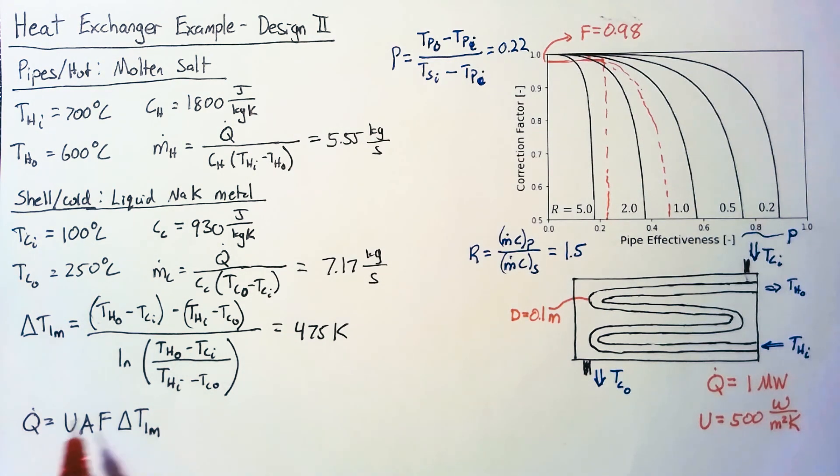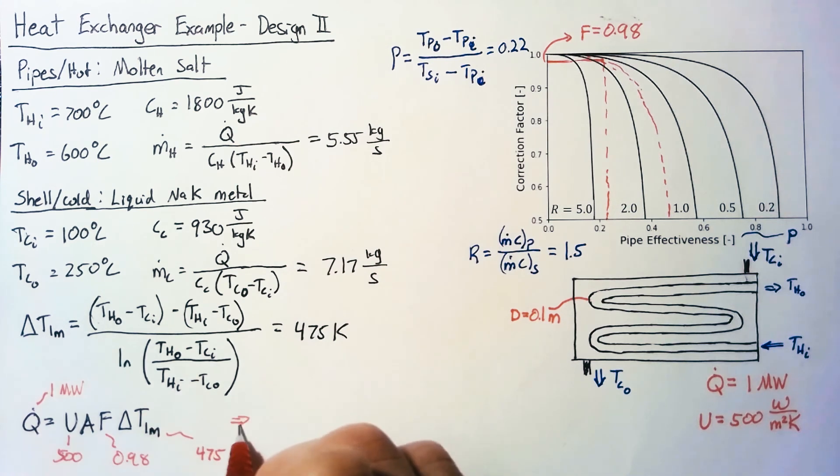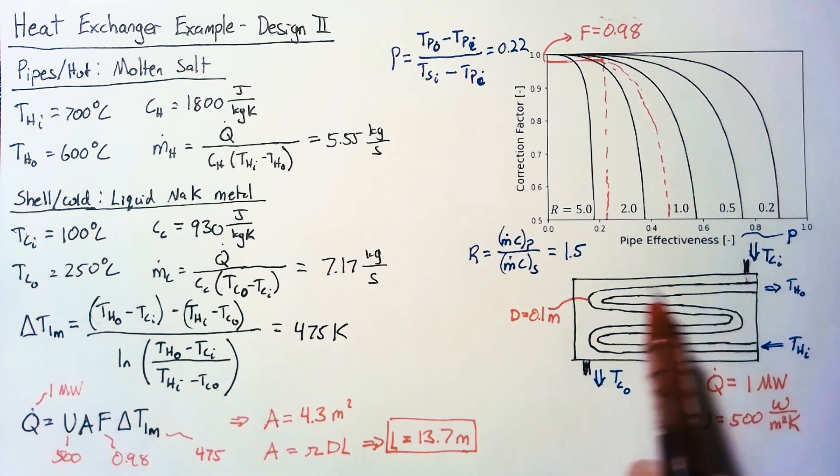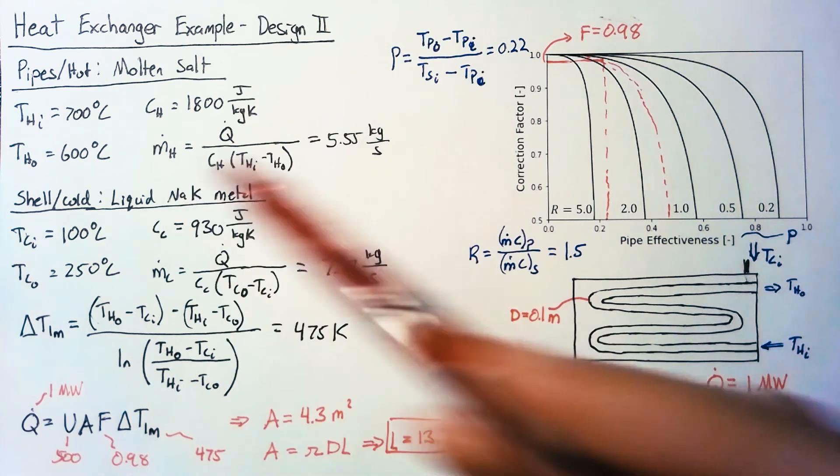So finally, we get to plug our numbers in to our Q equation. So our U was 500, our F was 0.98, our delta T was 475, and our Q dot was 1 megawatt. So that leads us to an area of 4.3 meters squared. And then, of course, we know that area is also going to be just pi times D times L for the outside of the pipe, which lets our length be 13.7 meters. So the total length of our pipe inside our shell is going to need to be 13.7 meters to match the temperatures and Q dot that we need.